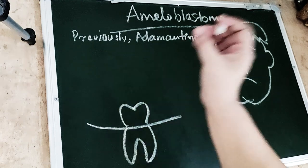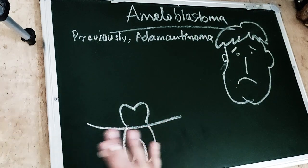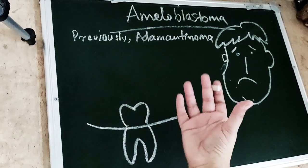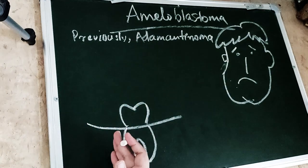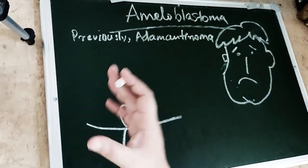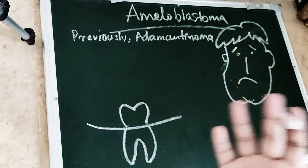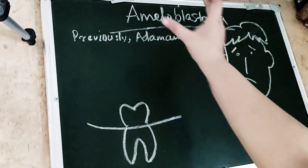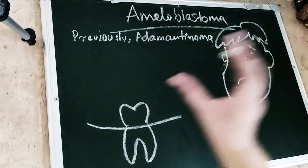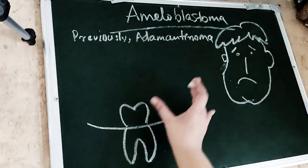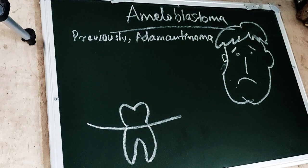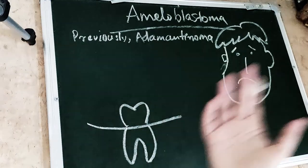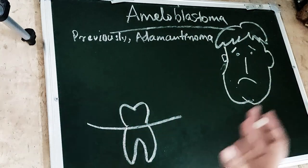Ameloblastoma is a true neoplasm of the enamel organ tissue wherein there is no enamel formation happening. Before that point there is differentiation, and this leads to tumour formation. This is a neoplasm of enamel organ type tissue — hence the name ameloblastoma. Ameloblasts are the cells which form the enamel, so there is proliferation of ameloblasts to form a true tumour, a true neoplasm. This is the most common neoplasm.